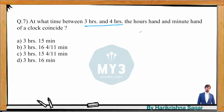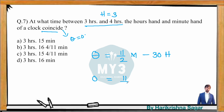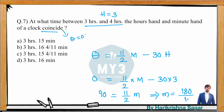Example: at what time between 3 and 4 o'clock do the hands coincide? Coincide means θ = 0 and H = 3. Substituting: 0 = 11/2·M − 30×3, so 90 = 11/2·M, giving M = 180/11 = 16 and 4/11 minutes. So the hands coincide at 3:16 4/11 minutes.